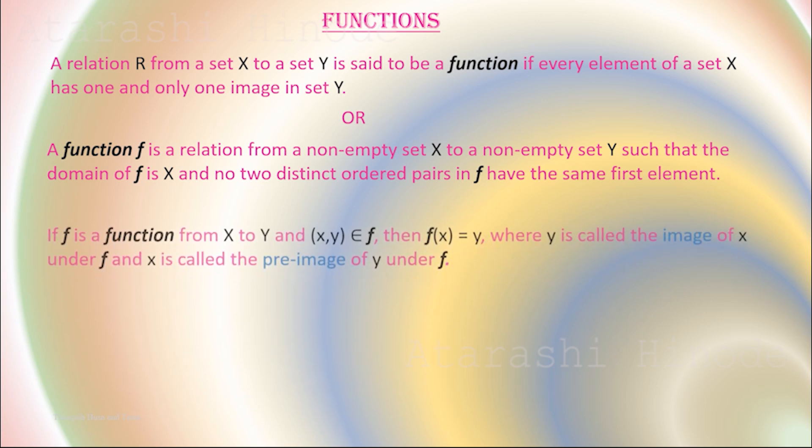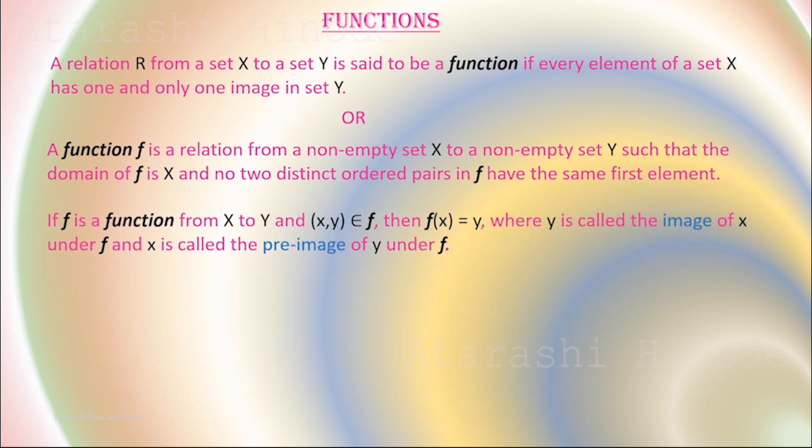If f is a function from X to Y and (x,y) belongs to f, then f(x) equals y, where y is called the image of x under f and x is called the pre-image of y under f.